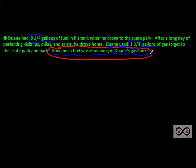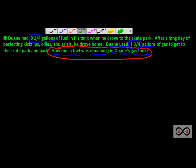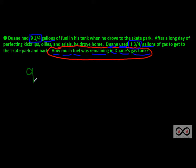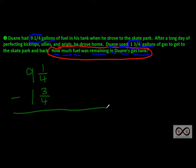Now we'll set up the mathematical model using numbers, pictures, and words. We start with nine and one-fourth gallons of fuel in his tank. But he drove to the skate park and back, and when he did that he used one and three-fourths gallons of gas. We have to subtract these — but how will we do this?